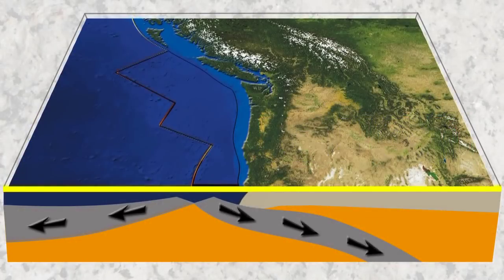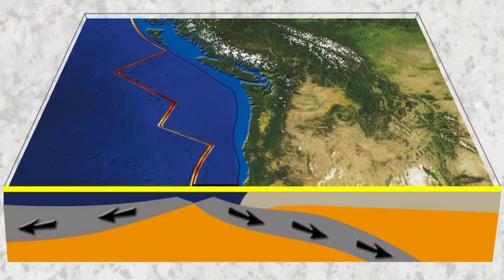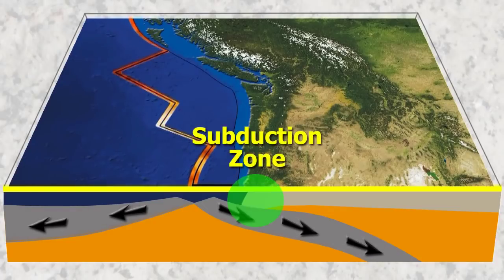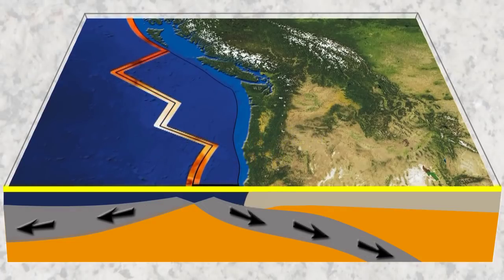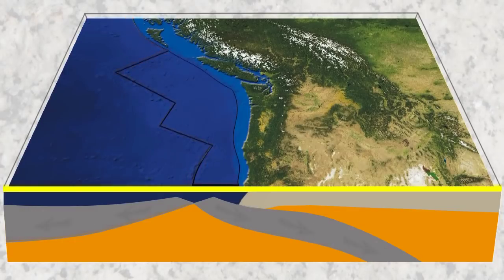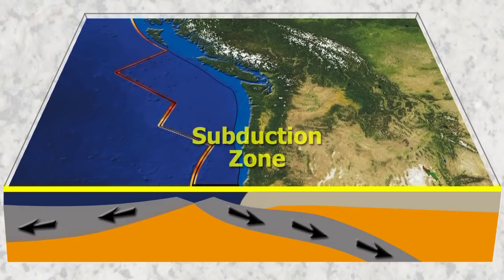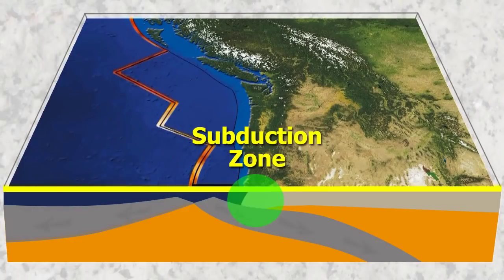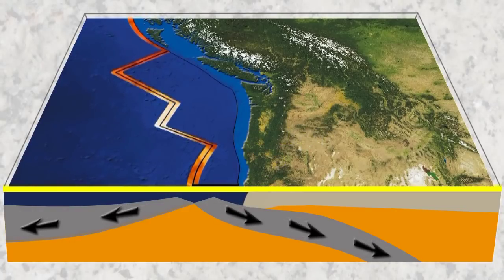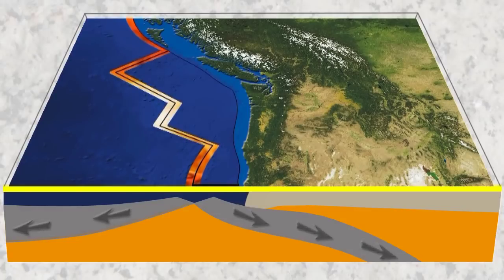Megathrust earthquakes can only occur in places where a plate is pushed under another plate. This process is called subduction. Earthquakes that occur because of this process are the only known earthquake type that can cause a 9.0 or greater earthquake. It is because of this that most megathrust earthquakes cause large tsunamis.